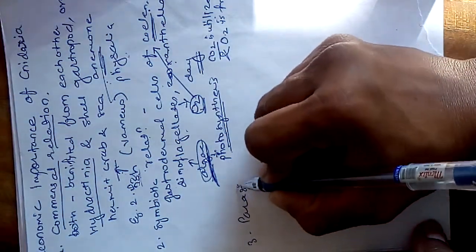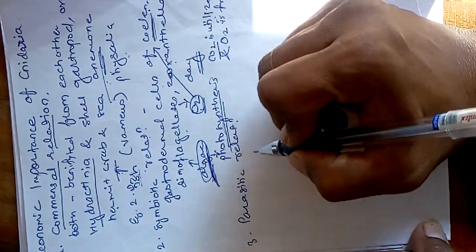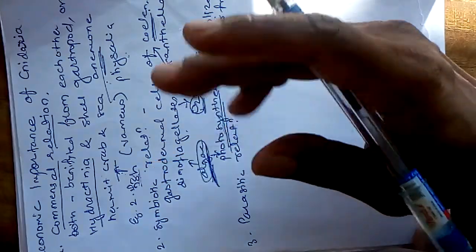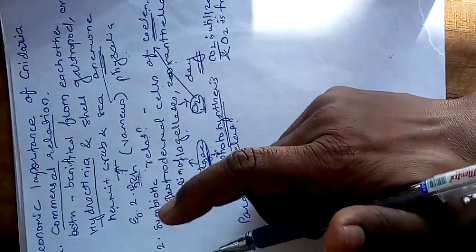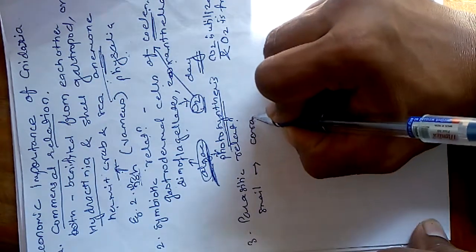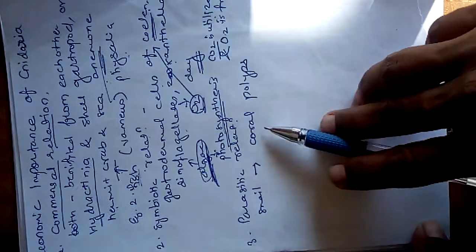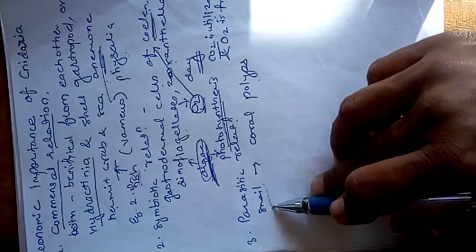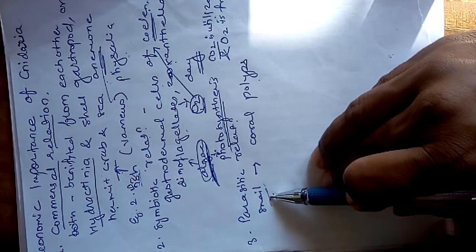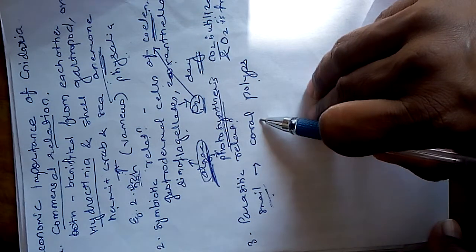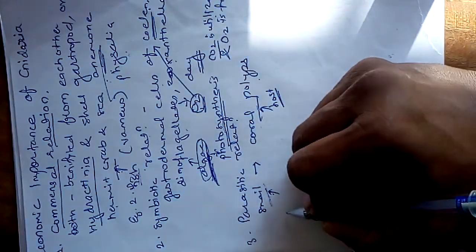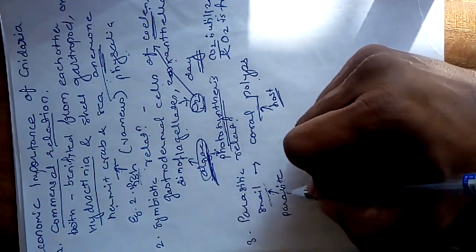The third type is the parasitic relation. One organism gets benefited and another suffers. In some cases, snails suck the juice from the coral polyps and feed on the tissues of soft corals. These snails act as parasites and the coral polyps act as the host. This is called a parasitic relationship.